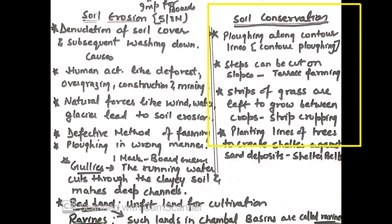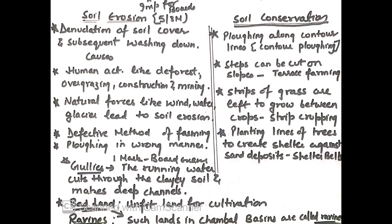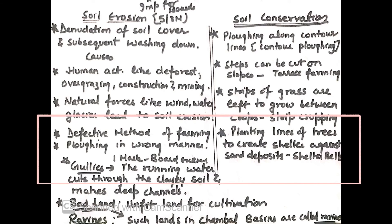Moving on to soil conservation: plowing along contour lines, steps can be cut on slopes, strips of grass are left to grow between crops, and planting lines of trees to create shelter against sand deposits. Gullies means running water cuts through the clay soil and makes deep channels, whereas badland means land unfit for cultivation. Ravines — badland in Chambal Basin — are also called ravines.